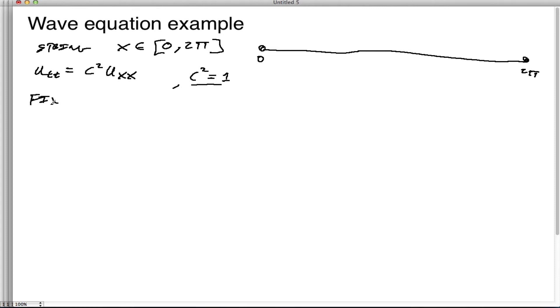So we're going to have fixed ends. And that makes it a string, sort of like a guitar string or a harp string. It's of a certain length, and it has a certain tension on it that gives it a wave speed of c equals 1. And we have the fixed ends, make that 0. And finally, now we have an initial condition.